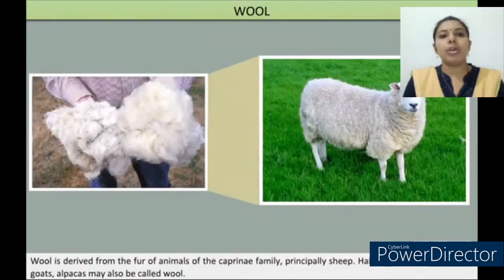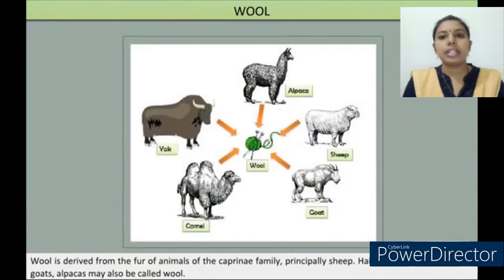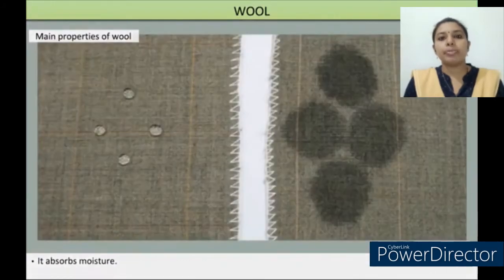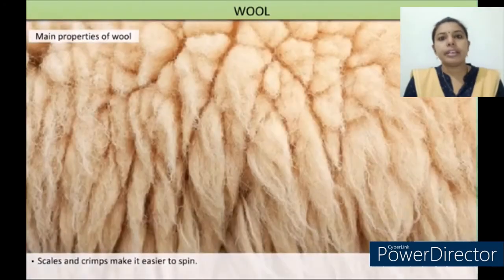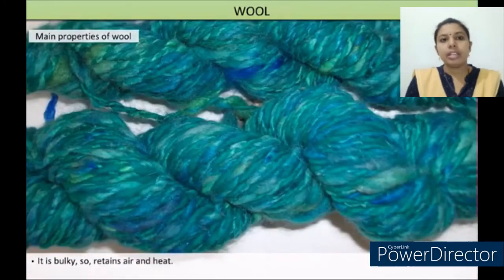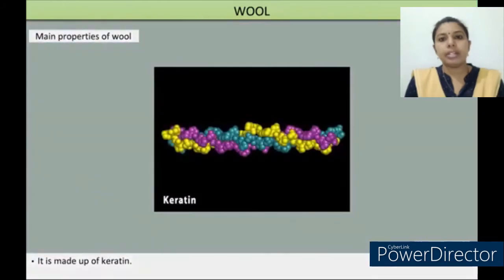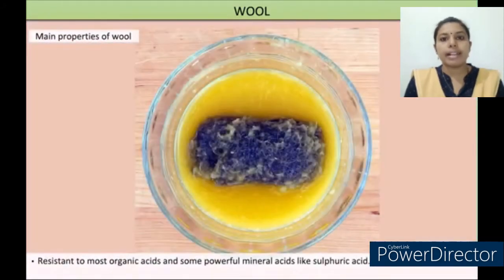Let's discuss about wool. Wool is derived from the fur of animals of the caprine family, principally sheep. Hair of other mammals like goats and alpacas may also be called wool. Wool absorbs moisture. Its scales make it easier to spin. It's bulky, so it retains air and heat. It is made up of keratin, resistant to most organic acids and some powerful mineral acids like sulfuric acid.